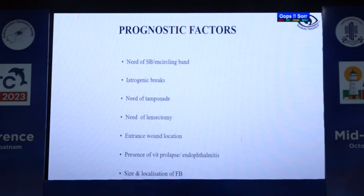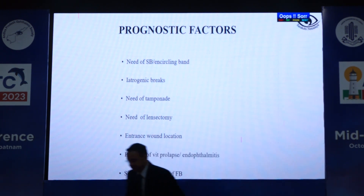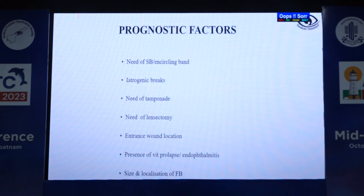Prognostic factors include the need for a scleral buckle or encircling band, which is a sign of poor prognosis, as well as iatrogenic breaks, need for tamponade, and need for lensectomy along with vitrectomy. The entrance wound location, vitreous prolapse, associated endophthalmitis, and presence of a foreign body are all poor visual prognostic factors.